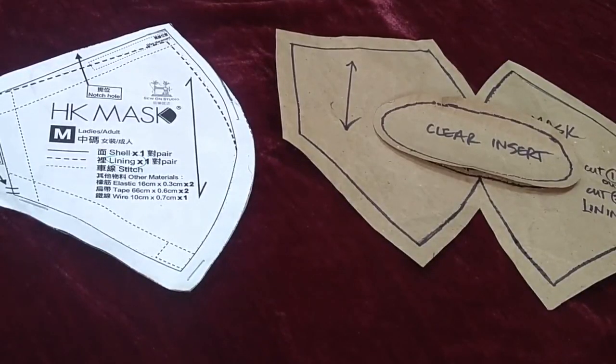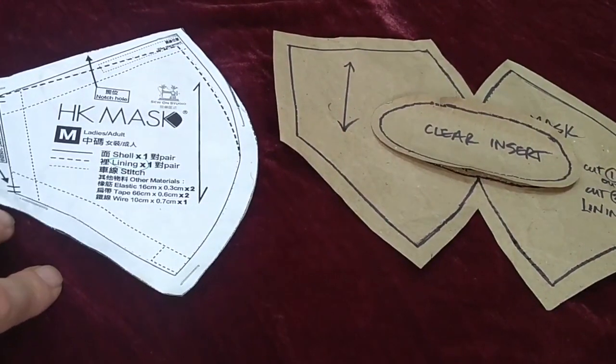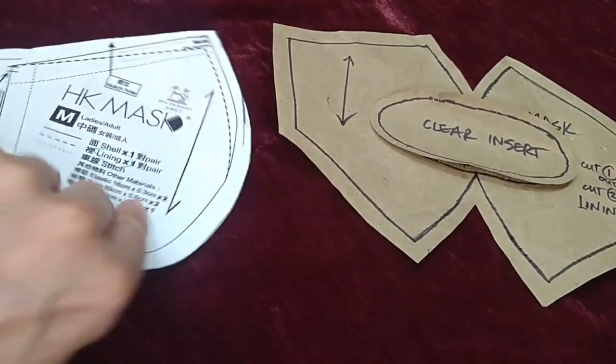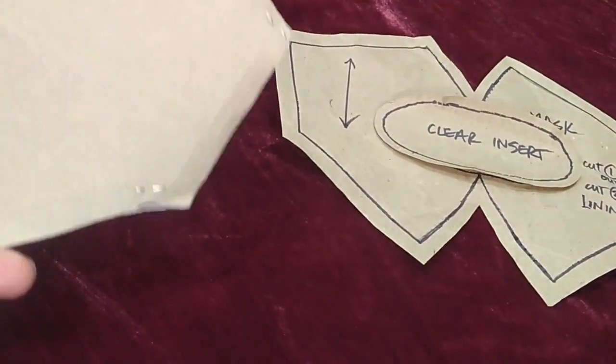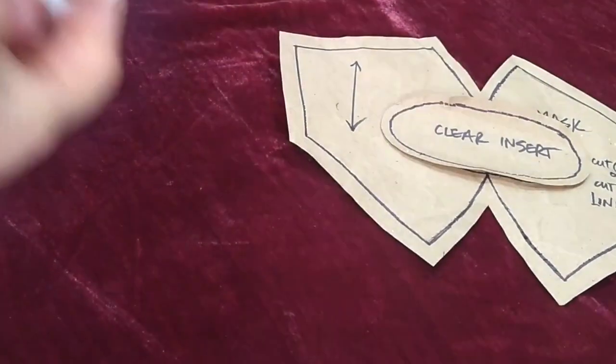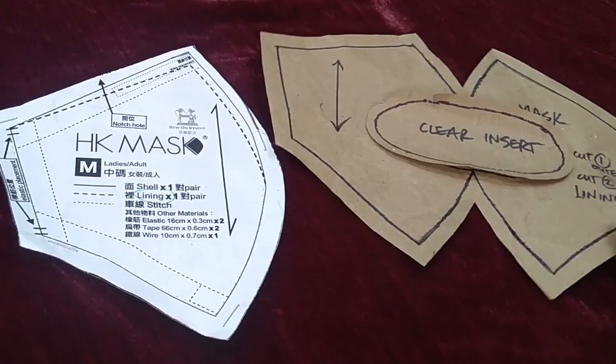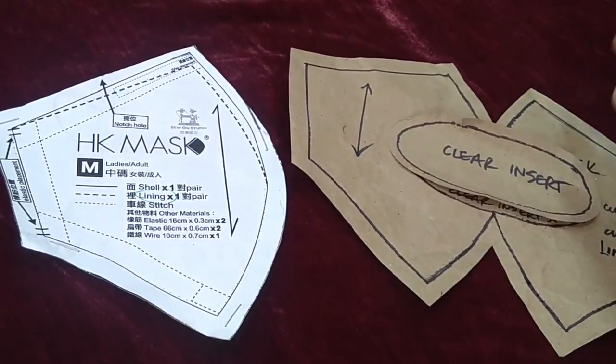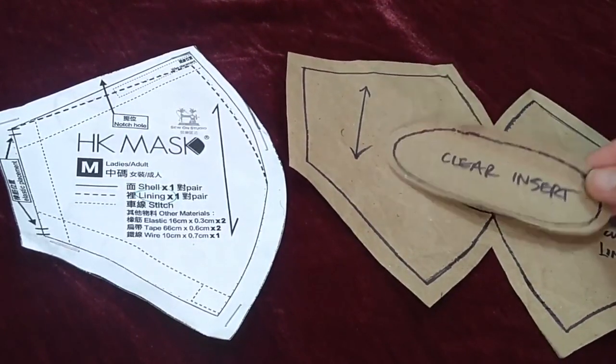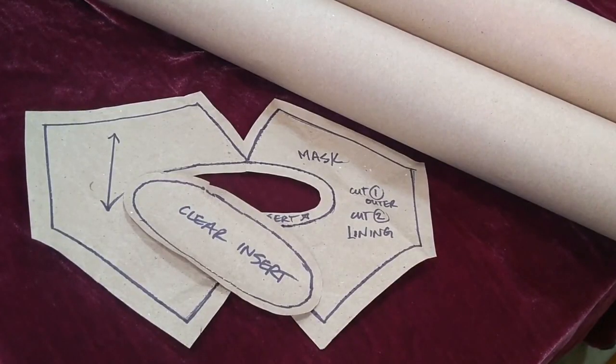I make my own patterns all the time. I based this one on the Hong Kong mask, which I downloaded and printed from the internet. I took the basics, stapled it to something a little bit stronger in the back so it would hold up, and then I adapted it into this pattern right here. You can see I made this all in one piece and added a clear plastic insert. I used basic craft paper to make this pattern.